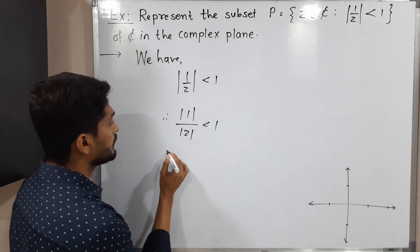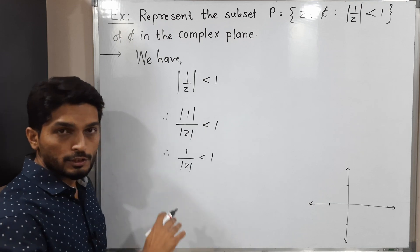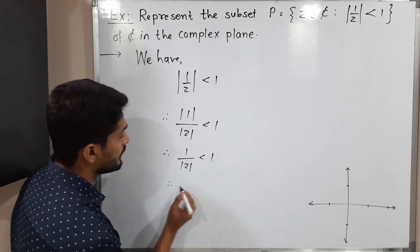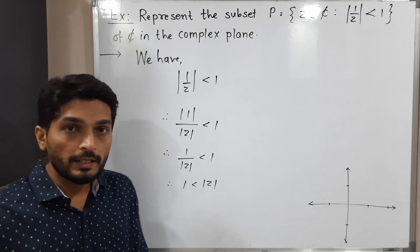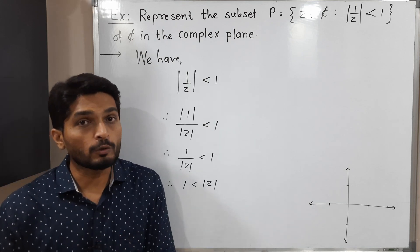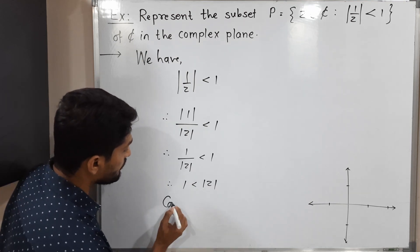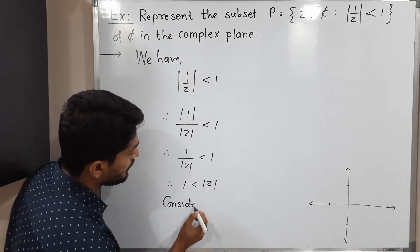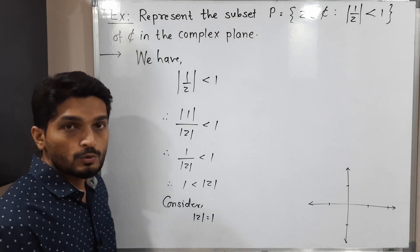Therefore 1 < |z|. To find the exact curve, I am going to replace the inequality by equality. So consider |z| = 1.